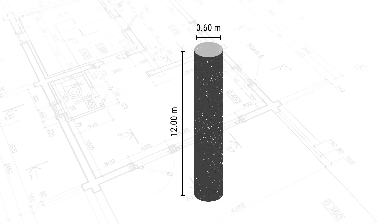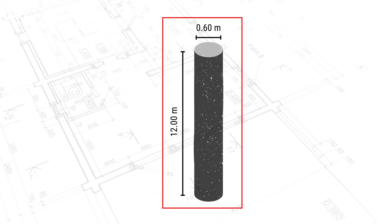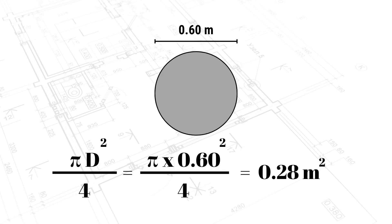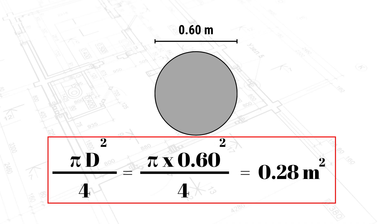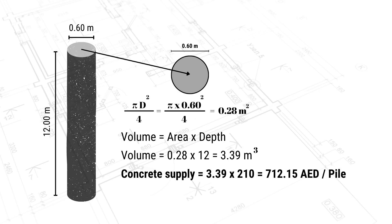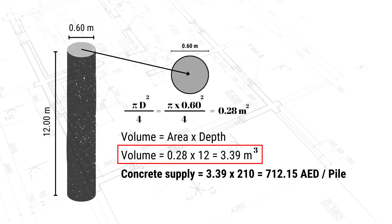Starting with the concrete supply, we have a pile of diameter 0.6 meters and a depth of 12 meters. The first thing is to calculate the concrete quantity required. The area of the pile is pi × d² ÷ 4, so 3.14 × 0.6² ÷ 4 = 0.28 square meters. The volume equals area × depth, so 0.28 × 12 = 3.39 cubic meters of concrete.